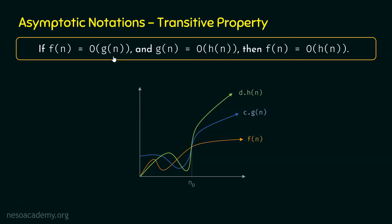If G(n) is asymptotically bigger than F(n) and H(n) is asymptotically bigger than G(n), then it is clear that H(n) is also asymptotically bigger than F(n). From this graph, we are observing the same thing. So it is clear that the transitive property is true. But this is the graphical proof — let's try to prove this property mathematically as well.